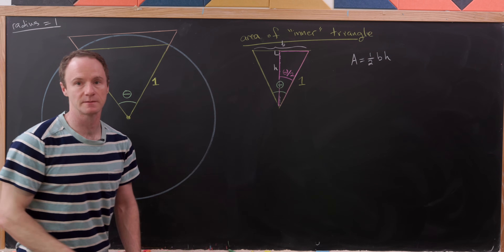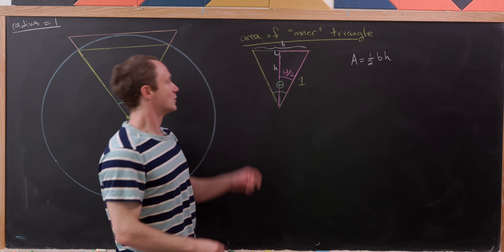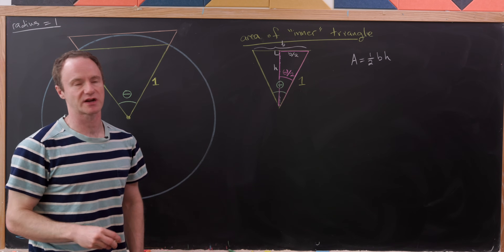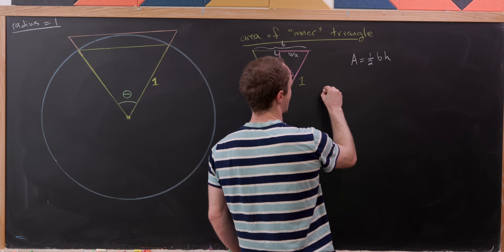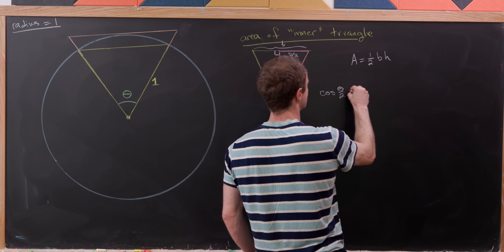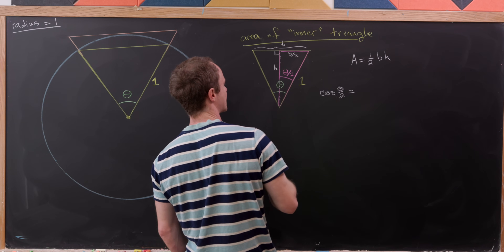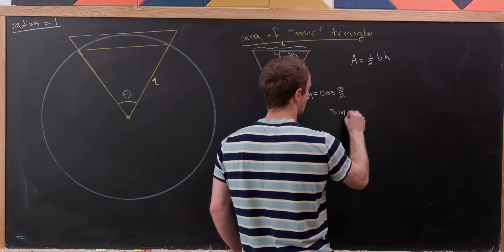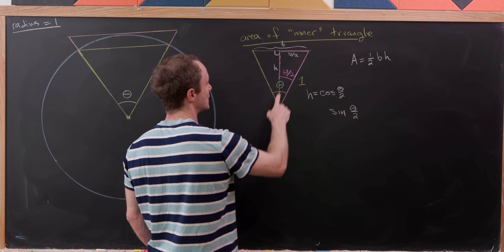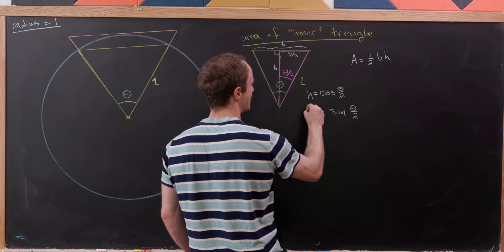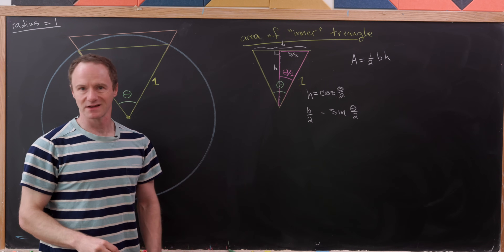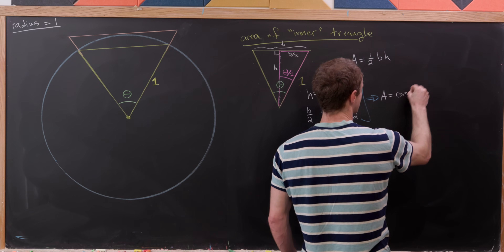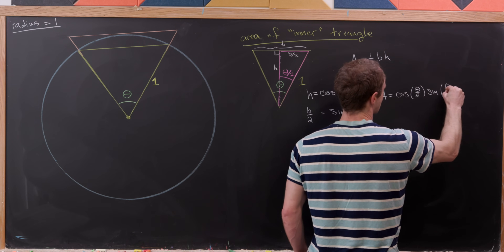The angle of this half-triangle is theta over 2, and we also have a right angle. We can express B over 2 and H in terms of theta using trig functions. The cosine of theta over 2 equals adjacent over hypotenuse, which is H. And the sine of theta over 2 equals opposite over hypotenuse, which is B over 2. Putting that together, the area equals cosine(θ/2) times sine(θ/2).